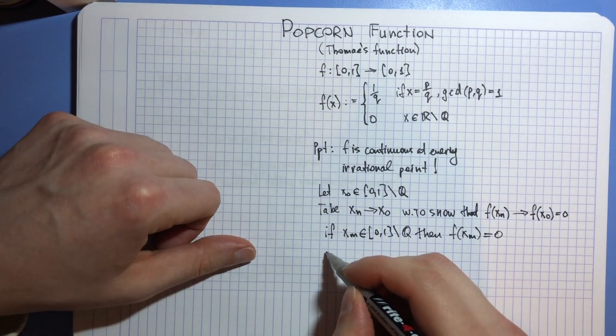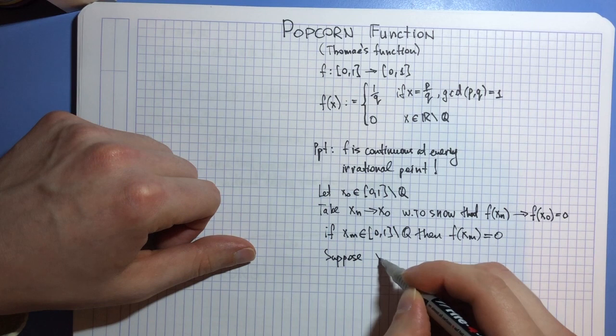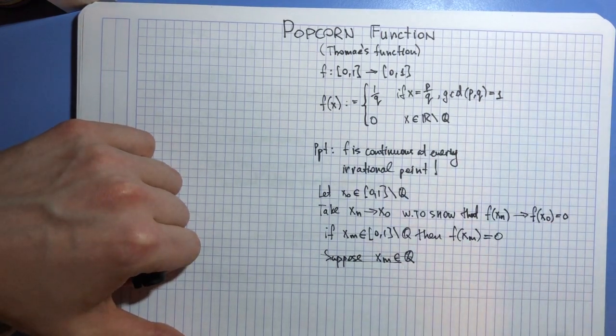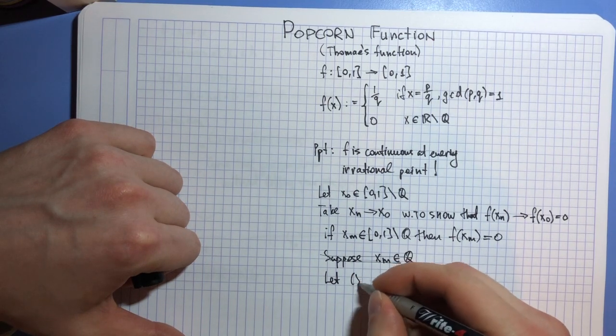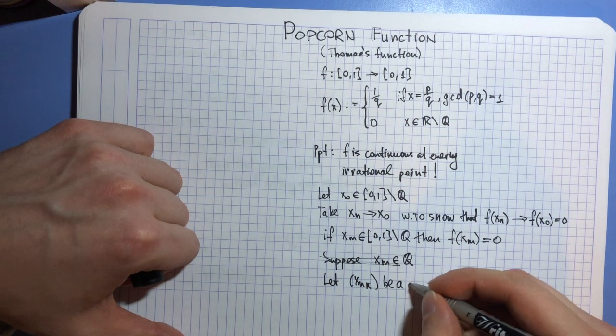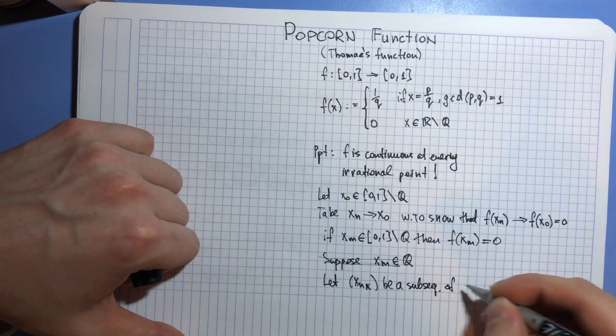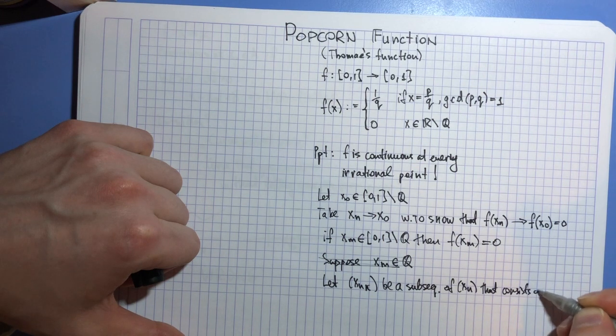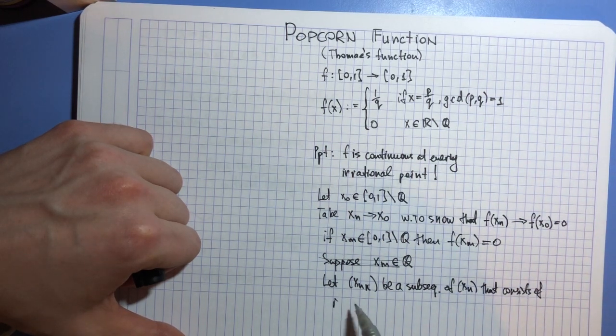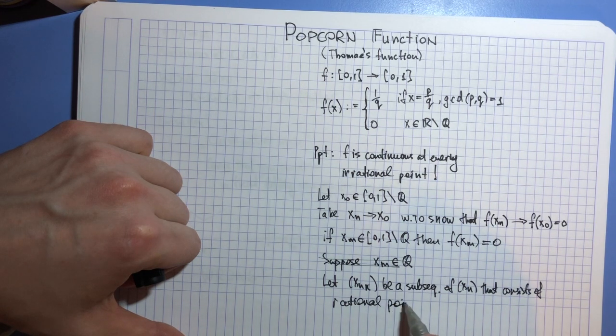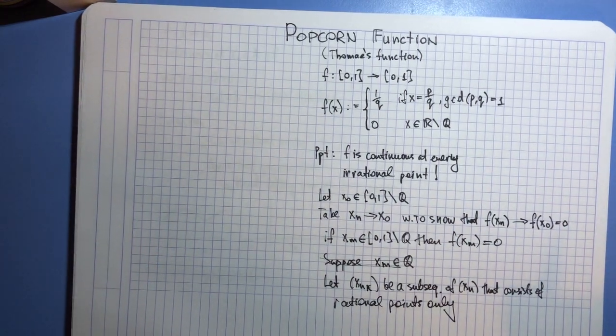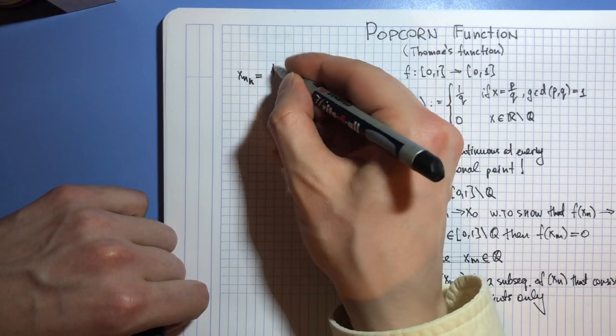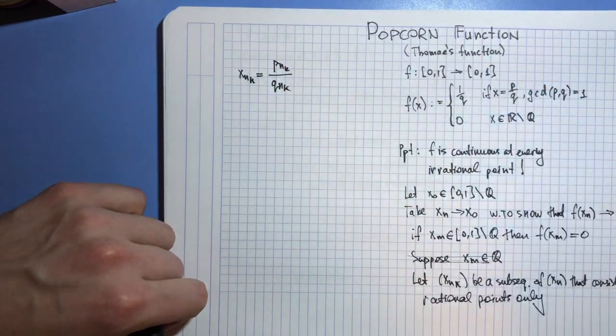It is more interesting to consider points that are rational. In fact, it's better to consider a subsequence. Let xₙₖ be a subsequence of xₙ that consists of rational points only. But if they are rational, you know that we can rewrite them as numerator over denominator, so it's pₙₖ over qₙₖ, right?